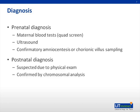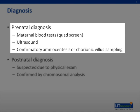Down syndrome can be diagnosed before or after birth. Prenatal diagnostic tests include maternal blood tests, most commonly the quad screen, and ultrasound. The quad screen includes measurement of AFP, unconjugated estriol, HCG, and inhibin A. Ultrasound evaluation typically involves assessment of nuchal translucency at 10 to 13 weeks. If Down syndrome is suspected based on the quad screen or ultrasound, a confirmatory diagnosis can be made with amniocentesis or chorionic villus sampling.